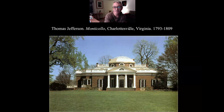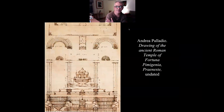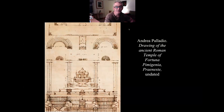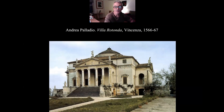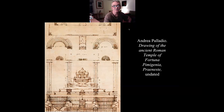Thomas Jefferson's estate, Monticello in Virginia — these ideals of the Renaissance, which sort of set the stage for the Enlightenment, also had a lot to do with the ideals behind the early establishment of the United States. The Villa Rotonda is like a precursor to Jefferson's house — it's a distant connection, but it's definitely there.